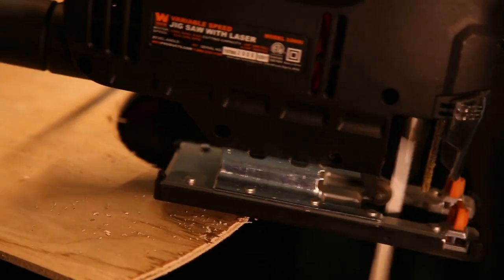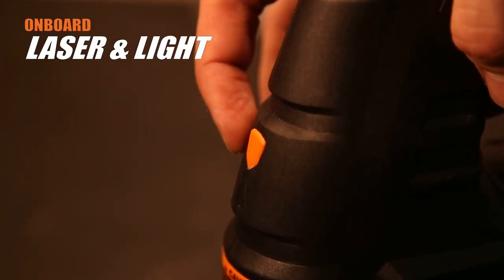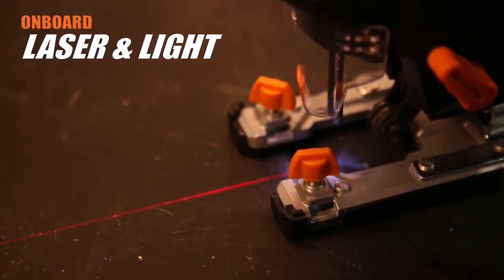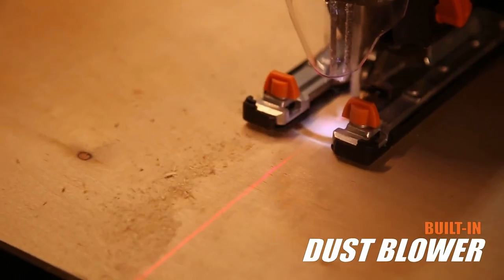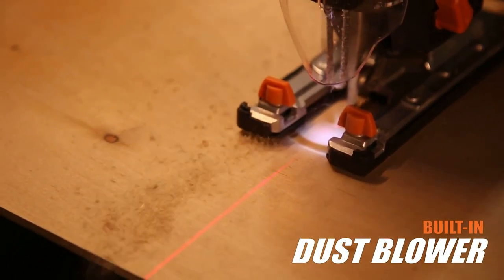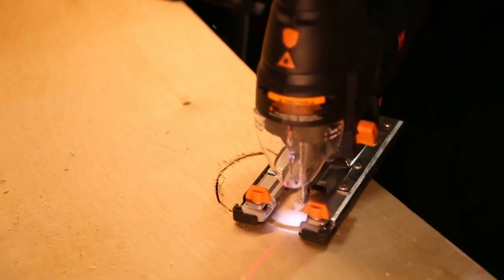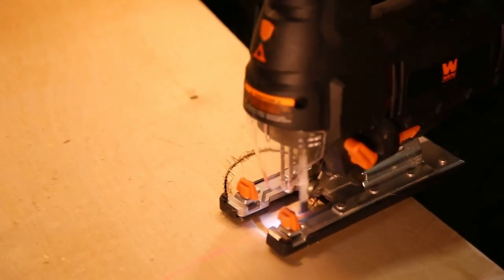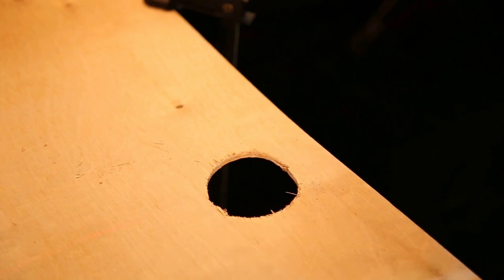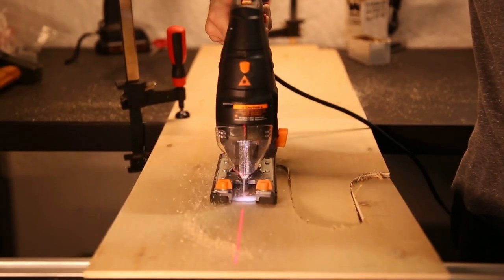Onboard laser keeps your line of cut right on target, while the front mounted LED light helps illuminate your workpiece. Attack wood up to 4 1/4 inches thick and metals up to 3/8 of an inch thick. The orbital selection knob helps adjust the strength of the blade to match the density of the cutting material.